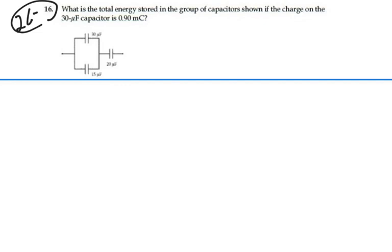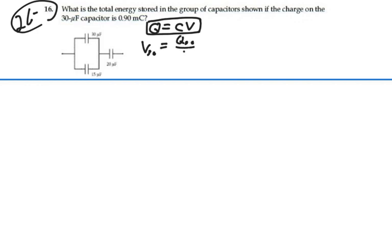We're given the charge on the 30 microfarad capacitor, so we can figure out its voltage because charge is equal to capacitance times voltage. The voltage on the 30 microfarad capacitor equals its charge divided by its capacitance: 0.9 millicoulombs over 30 microfarads, or 30 times 10 to the minus 6, and that gives us 30 volts.